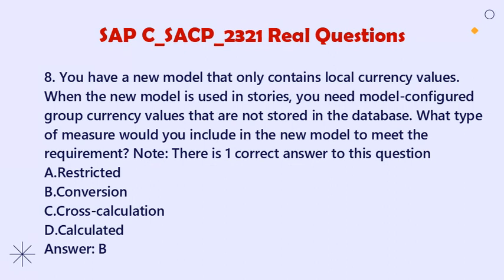Question 8: You have a new model that only contains local currency values. When the new model is used in stories, you need model-configured group currency values that are not stored in the database. What type of measure would you include in the new model to meet the requirement? Note: There is one correct answer. A. Restricted. B. Conversion. C. Cross-calculation. D. Calculated. Answer: B.